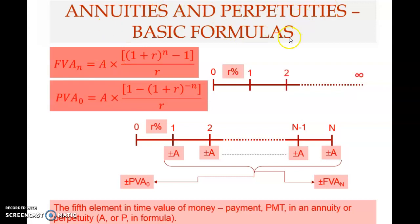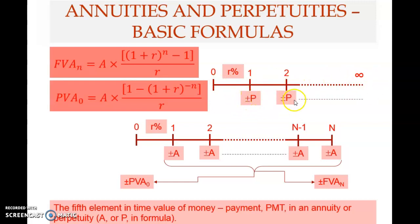Now let's look at perpetuity. The only difference is there is no defined ending or maturity. Payments can be positive or negative — cash inflow or outflow — and go on forever. You cannot determine a future value for perpetuity because there is no final payment and therefore no defined endpoint.